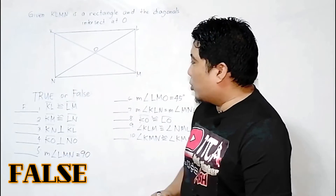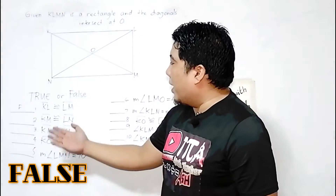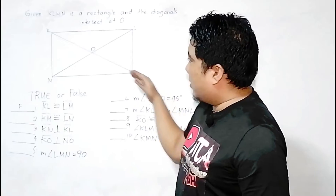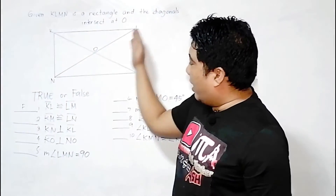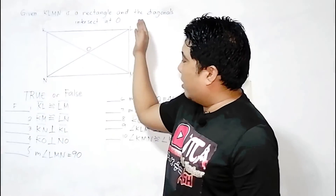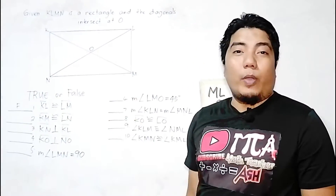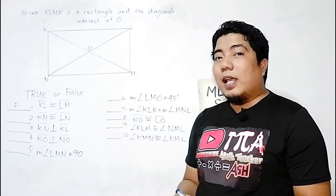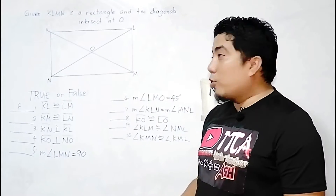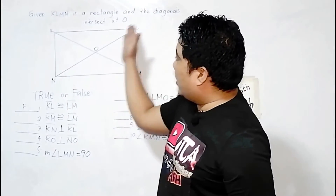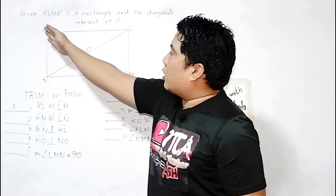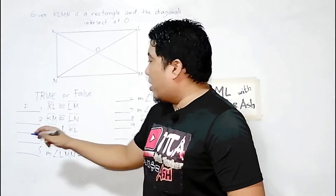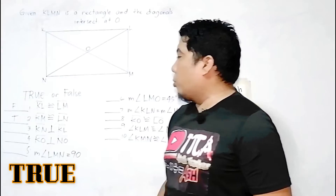Statement 2: Diagonal KM is congruent to diagonal LN. Remember the property of rectangles — the diagonals are congruent. So KM and LN are indeed congruent. Therefore, this statement is true.